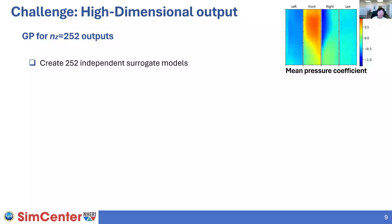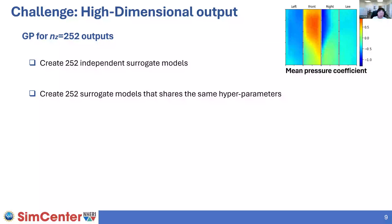There are different ways to handle this. First, we could create 252 independent surrogate models representing each pressure tap outcome, but this is resource-intensive because it means calibrating the correlation parameters 252 times. Another approach is to create 252 surrogate models but assume they share the exact same correlation parameters — that way we only need to calibrate a single set of parameters, so the computational cost is the same as creating a single surrogate model.